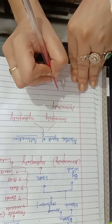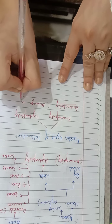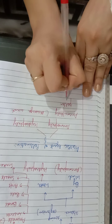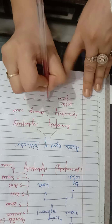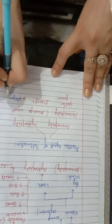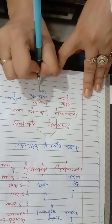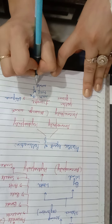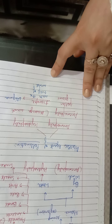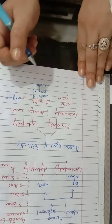Anemophily is pollination through the agency of wind. In this, pollen grains are transferred from the anther to the stigma with the help of wind. When pollen grains are transferred from one flower to another through wind, it is called anemophily and the flower is known as an anemophilous flower.